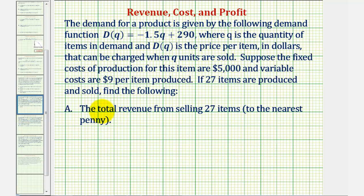So for part A, we want to find the total revenue from selling 27 items, where the revenue equals the quantity of items sold, which is 27, times the price of the item, which we're not given. But notice how we are given the demand function, where D of Q would be the price per item when Q units are sold.